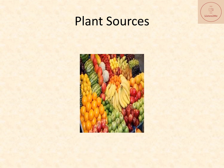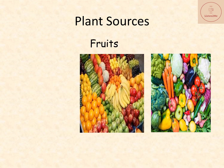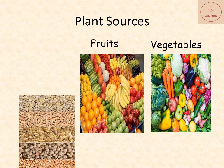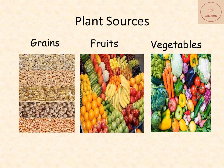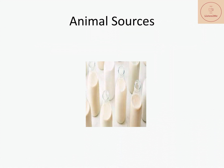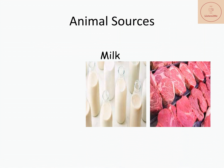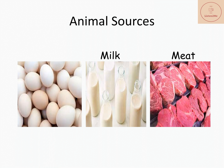From plants, we get fruits, vegetables, grains, etc. From animals, we get milk, meat, and eggs.